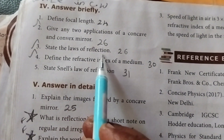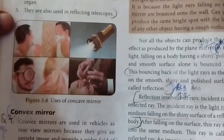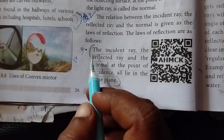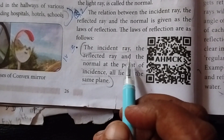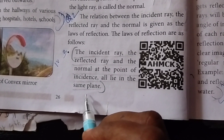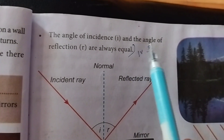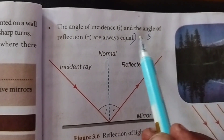Third question: state the law of reflection. Page number 26. The incident ray, the reflected ray, and the normal at the point of incidence all lie in the same plane. The angle of incidence and the angle of reflection are always equal.